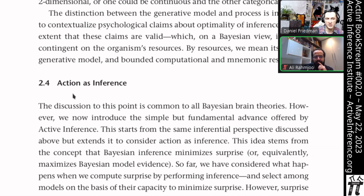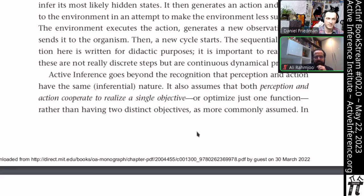Previous section 2.3 was on perception as inference, and now action as inference is going to be discussed. That is where they say the discussion to this point is common to all Bayesian brain theories. We now introduce the simple but fundamental advance offered by active inference, which is the extension of this inferential perspective to consideration of action as inference. Perception and action cooperate to realize a single objective.